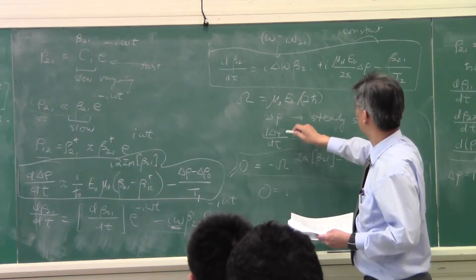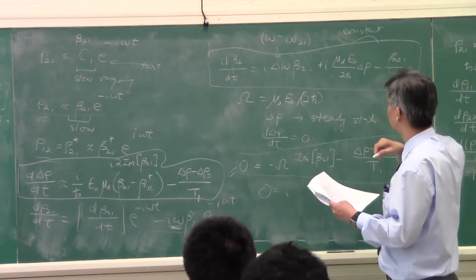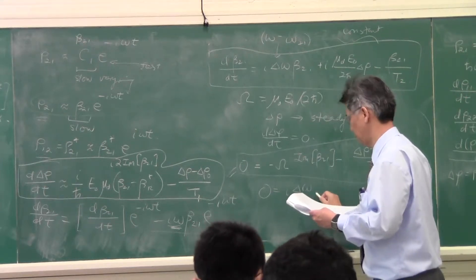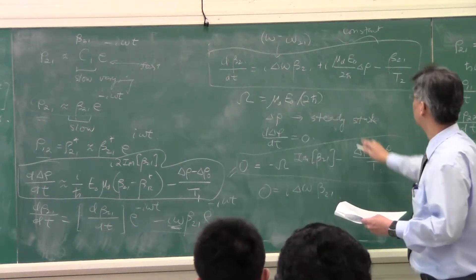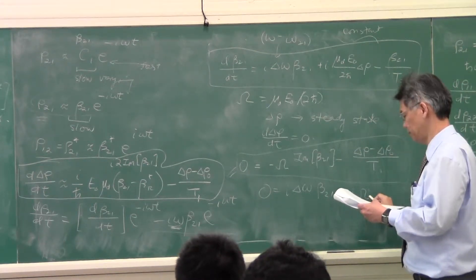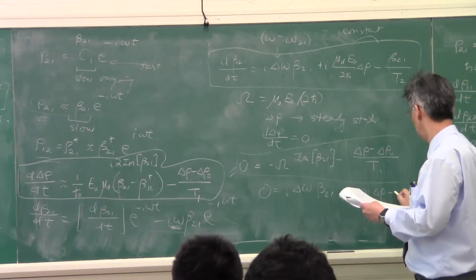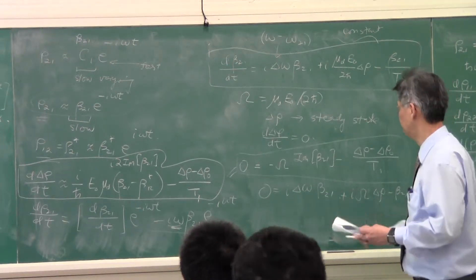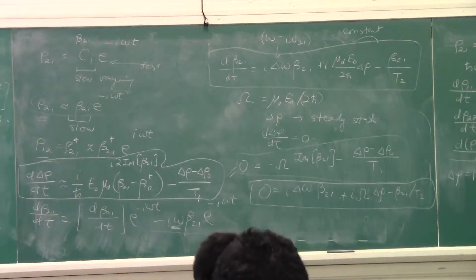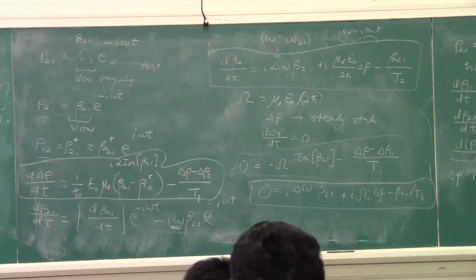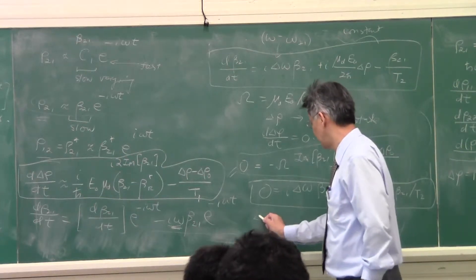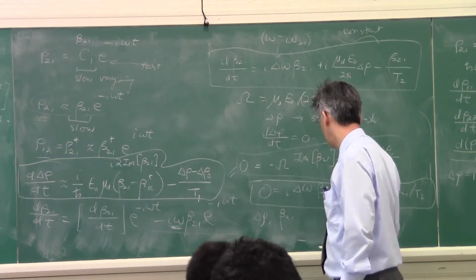I will define my delta omega, okay — beta to one — and then I use my capital Omega to redefine this term over here: I capital Omega delta rho minus beta to one divided by T2. So I have a second equation of motion that becomes something like that. But then what are the unknowns? The unknowns that I have in this equation are delta rho and beta to one.